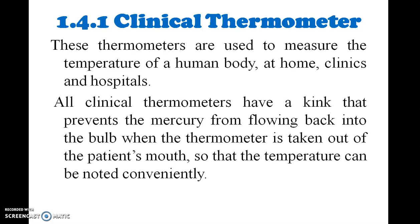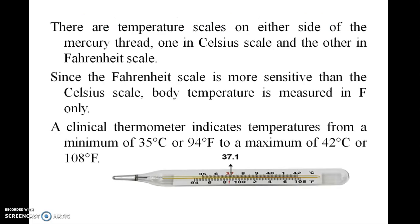The clinical thermometer has a thin tube. Before reading it, we shake the thermometer to bring the mercury down. We then read the temperature of the mercury thread. It has two scales — one in Celsius and another in Fahrenheit. The normal body temperature is around 97 degrees Fahrenheit.